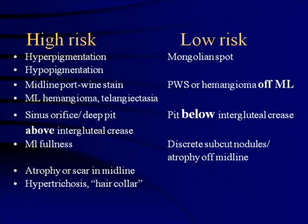You can differentiate high risk from low risk lesions. If the mass is hyper- or hypopigmented, midline, with a deep pit above the intergluteal crease, these are considered high risk. If it's simply a Mongolian spot, a hemangioma, or port wine stain off midline, or a pit below the intergluteal crease, these are considered low risk.